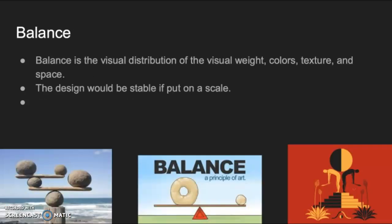Next, we have balance. Balance is the visual distribution of visual weight, colors, texture, and space. The design would be stable if put on a scale, as you can see in the middle example. It's basically talking about symmetry — symmetry is involved a little bit, as in the example we have on the right. But all in all, it's whether it can stay balanced.